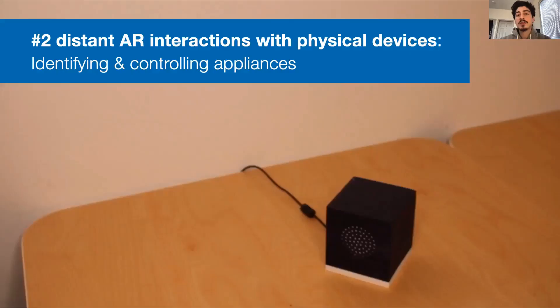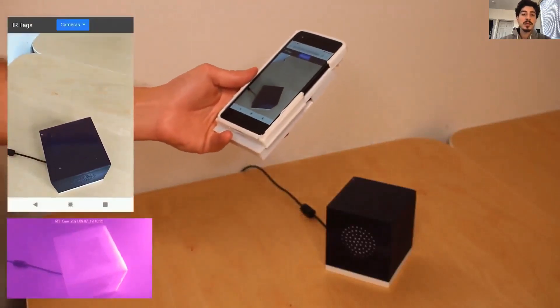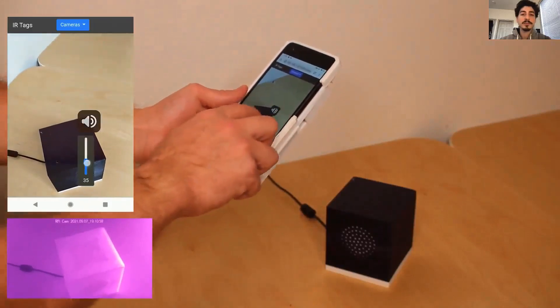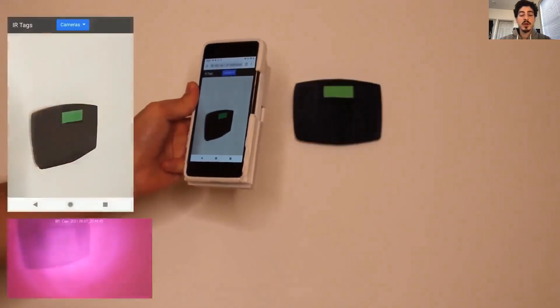In our second application, I want to show you how infrared tags can be embedded into devices to show the corresponding controls to the user. Here, a control menu is shown in the AR view, where the user can adjust the volume of the speaker, or set a temperature for the thermostat.